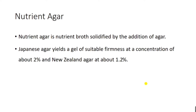Moving to nutrient agar — nutrient agar is a solidified nutrient broth by the addition of agar. Japanese agar yields a gel of suitable firmness at a concentration of about 2%, whereas New Zealand agar is used at about 1.2%. This is the concentration of agar to be added to nutrient broth in order to solidify it.